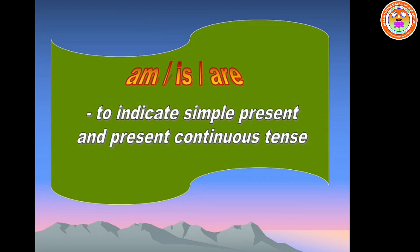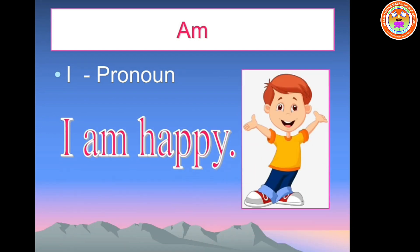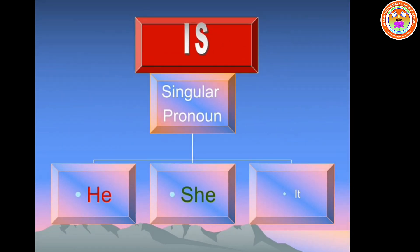Am, is, are are used to indicate simple present and present continuous tense. We have to use the auxiliary verb am only with the pronoun I. Example: I am happy. Is is used with singular subject or singular pronouns. The singular pronouns are he, she and it.